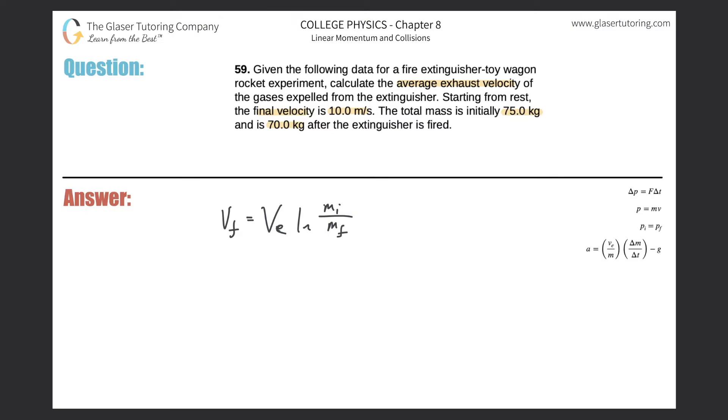Okay. So it's said it reaches a final velocity of 10. Well actually, first, hold on. What are we trying to calculate? We're trying to calculate the average exhaust velocity. So therefore, let's just solve this for V sub E.